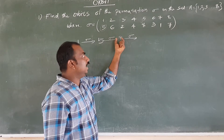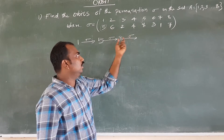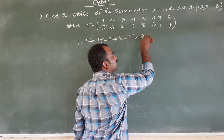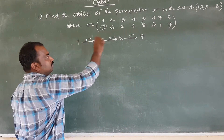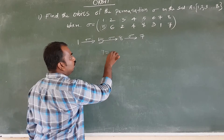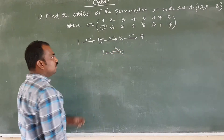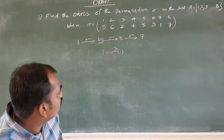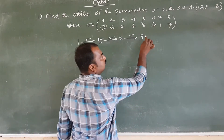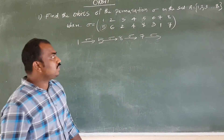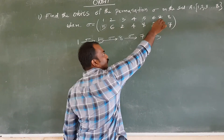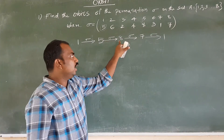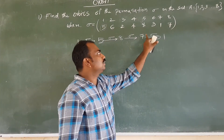The image of eight under sigma — eight in the image, which is 7. And the image of 7 is 1. So: 1 in image 5, 5 in image 8, 8 in image 7, 7 in image 1.